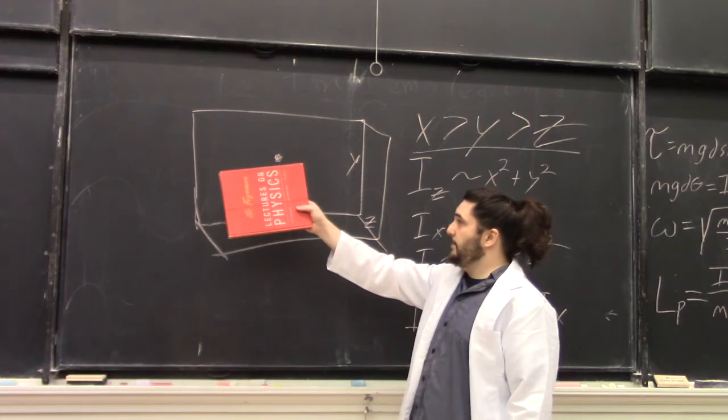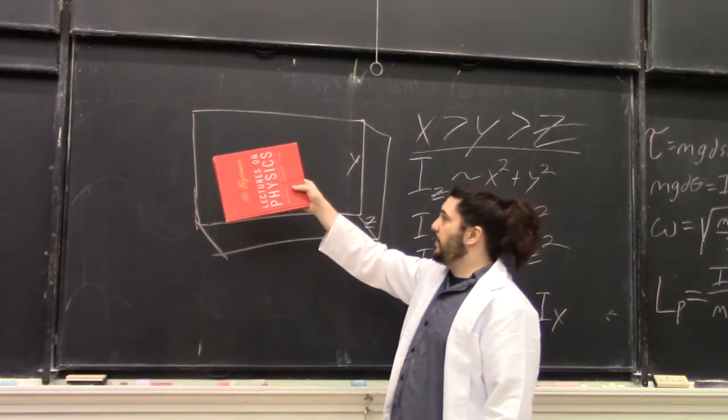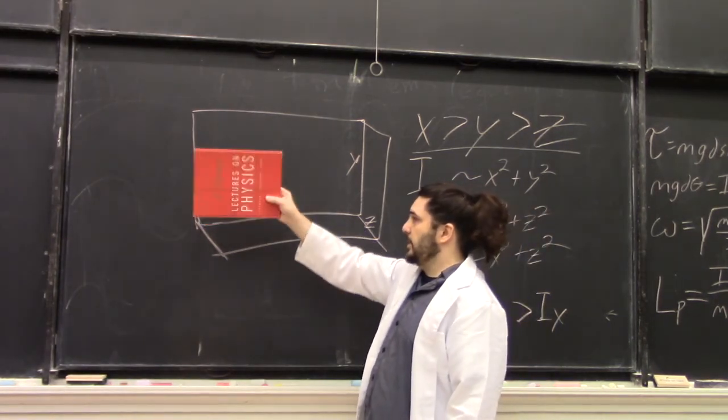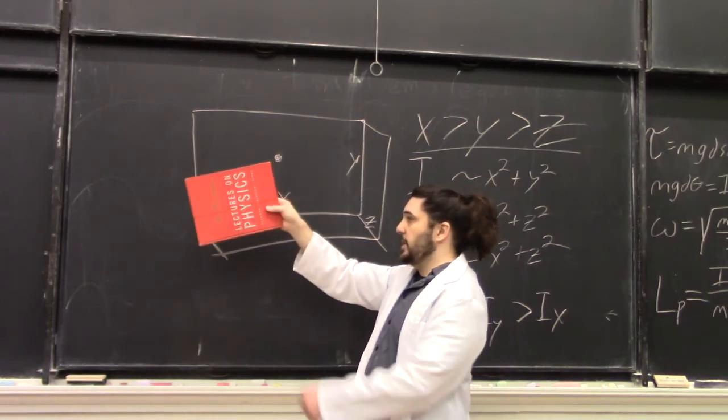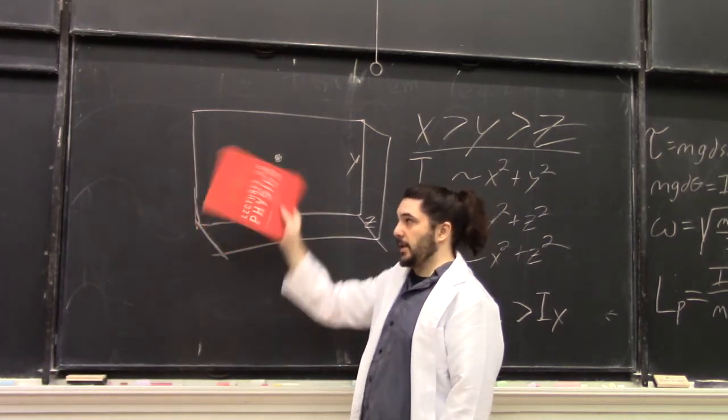So, if we hold the book up, rotating about the x-axis is like this. Rotating about the z-axis is like this.